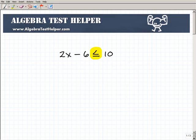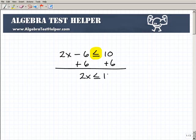All right, so 2x minus 6 is less than or equal to 10. So the first thing I want to do is I want to proceed as if I was solving for x. So I'm going to add 6 to both sides of the equation. And that's going to get me 2x is less than or equal to 16.